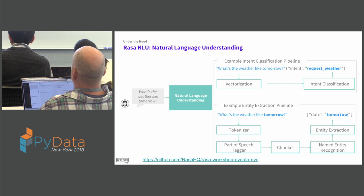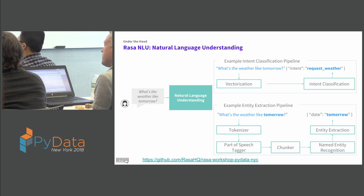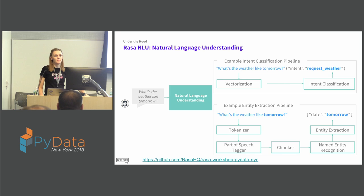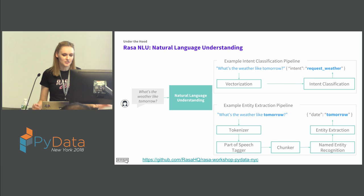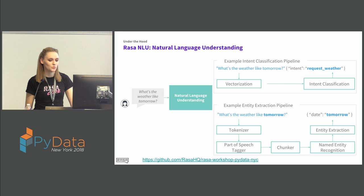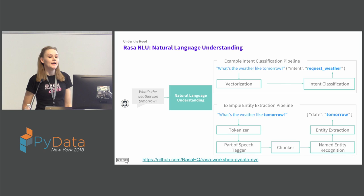The next stage is entity extraction. It's a deeper process but similar to intent classification when using word vectors. The sentence is tokenized into words, and then you can use a part-of-speech tagger to look up the grammatical meaning of each word — whether it's a noun, verb, adjective, and so on. Then we have a chunker: some entities, like addresses, consist of more than one word, so it's important to train a model that can extract those as a single entity chunk. Then you train a named entity recognition model. The result is entity extraction: you get the entity itself, its value, and its label. For example, in a weather query, 'tomorrow' would be extracted as an entity of type 'date' with value 'tomorrow.'